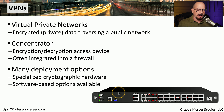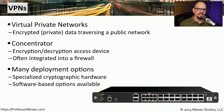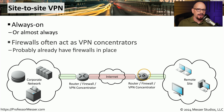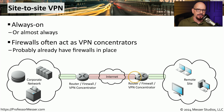VPN concentrators are often hardware devices with specialized encryption hardware built in for efficiency and throughput. But if you have a limited number of users, it's also possible to use your VPN concentrator as software in an operating system. This is a common site-to-site VPN configuration where a corporate network may be connected to a remote site over a public network such as the internet, with VPN concentrators — usually firewalls or routers — connecting the two sites. All traffic sent across that public internet is encrypted using this VPN technology.